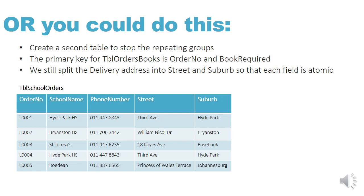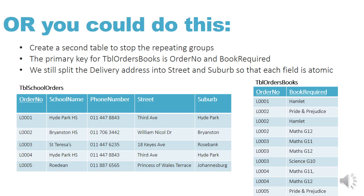We could also have done it a second way: creating a second table to stop the repeating groups. In the new table, the primary key is the order number and the book required together — remember, a primary key must identify a record or row uniquely, so we need both fields. We've also split the delivery address into street and suburb so each field is atomic. Strictly speaking, we should also have a third field for the street number, because St. Teresa's address shows '18 Keys Avenue' — the 18 should be in a separate column, as it makes the field non-atomic.